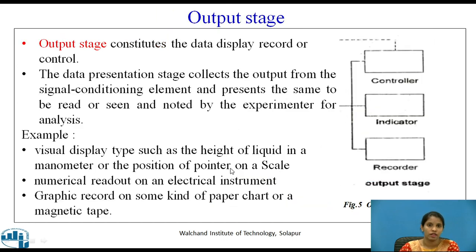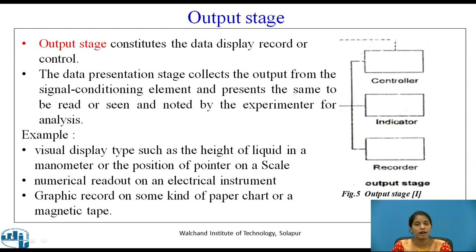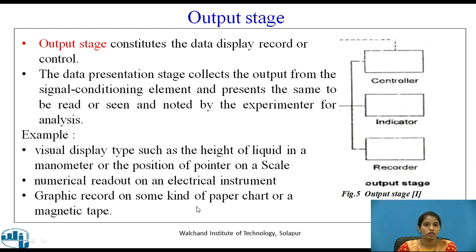The output stage consists of controller, indicator, recorder, and display units. It receives the signal from the signal conditioning element and presents it to be read or noted by the experimenter for analysis. Examples include visual display types such as height of liquid in a manometer or position of a pointer on a scale, numerical readout on an electrical instrument, and graphic records on paper chart or magnetic tape. Any electrical or digital instrument showing data in numerical format is an example of data presentation.